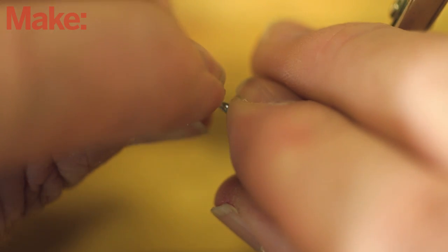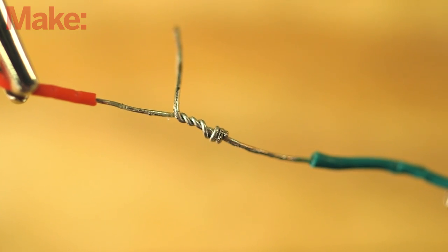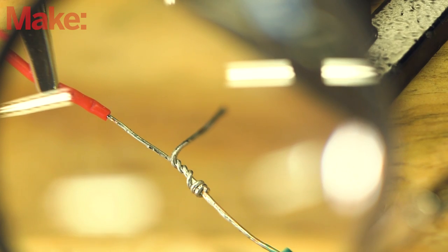Begin to twist one of the leads around the other, keeping your twist as tight as possible. You want the coils touching each other while making constant contact with the lead it's twisting around.